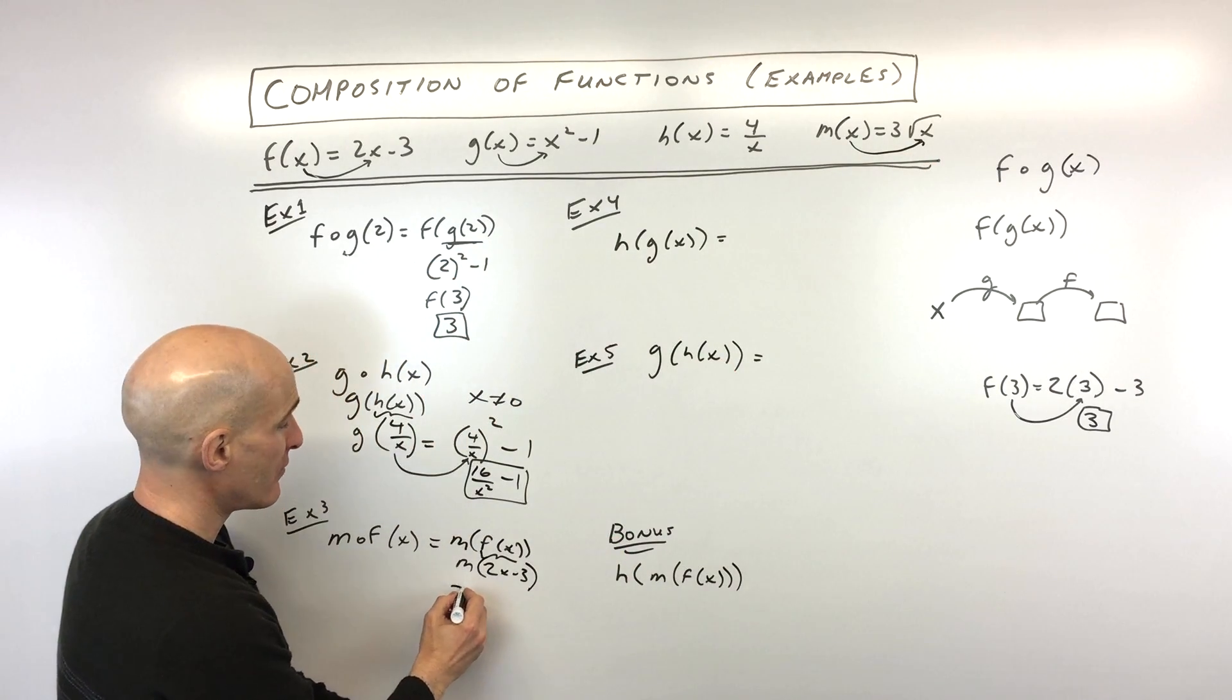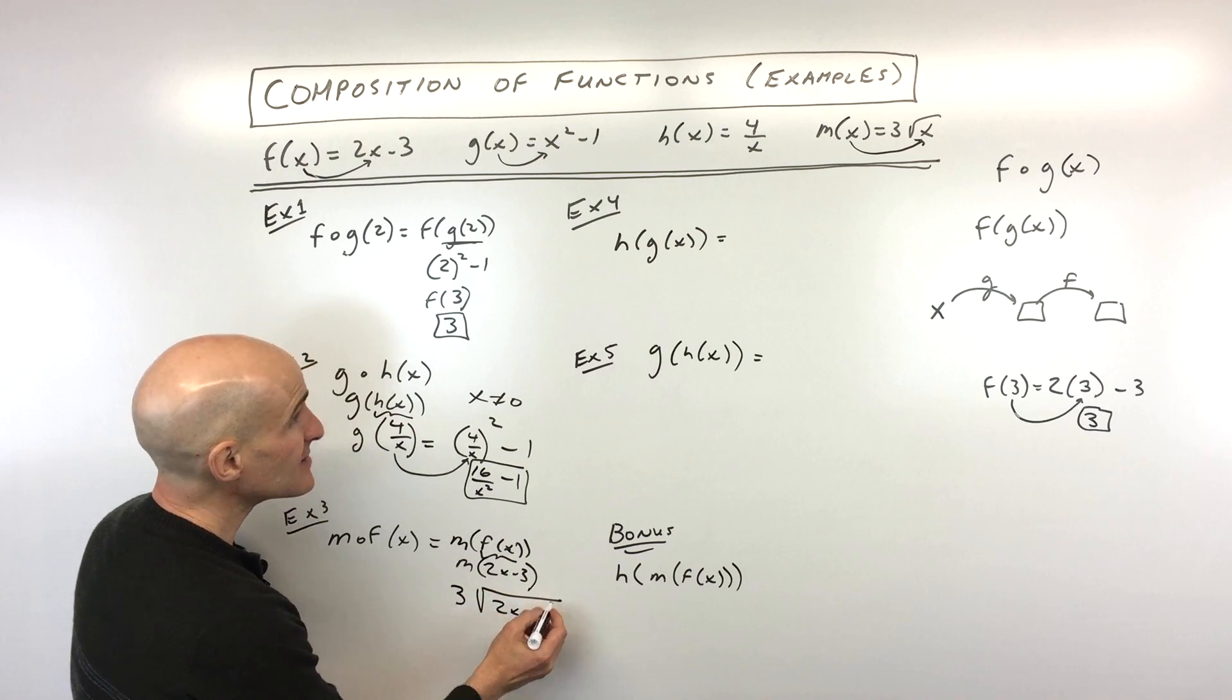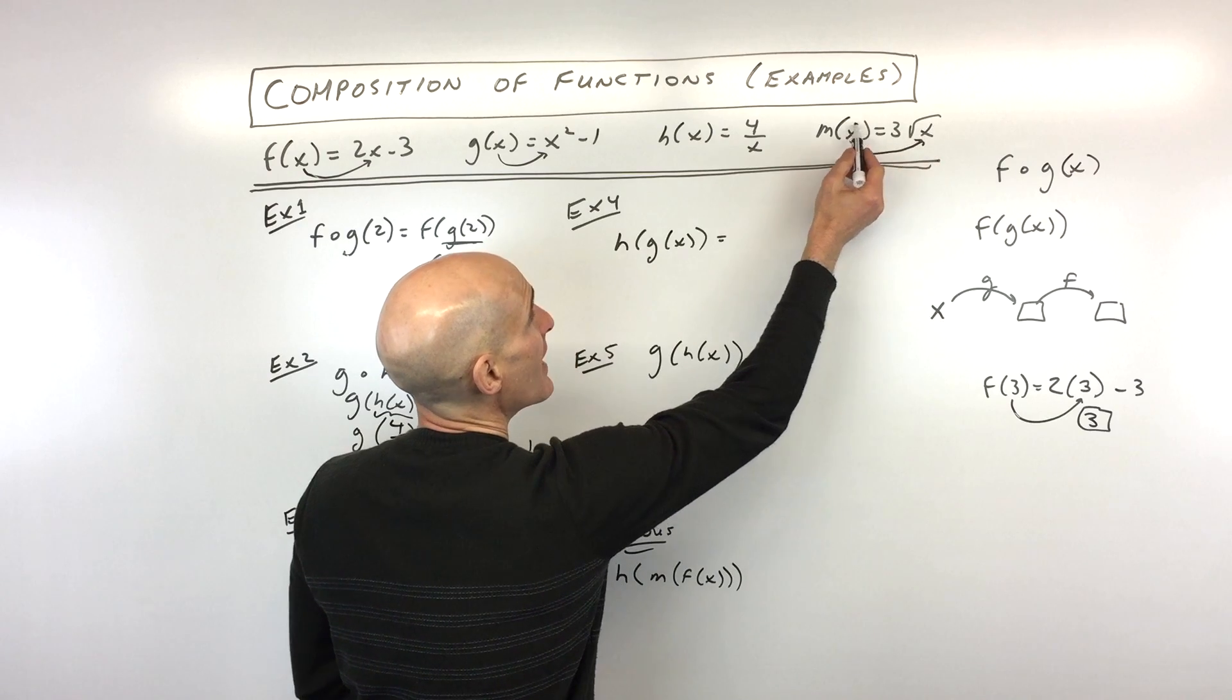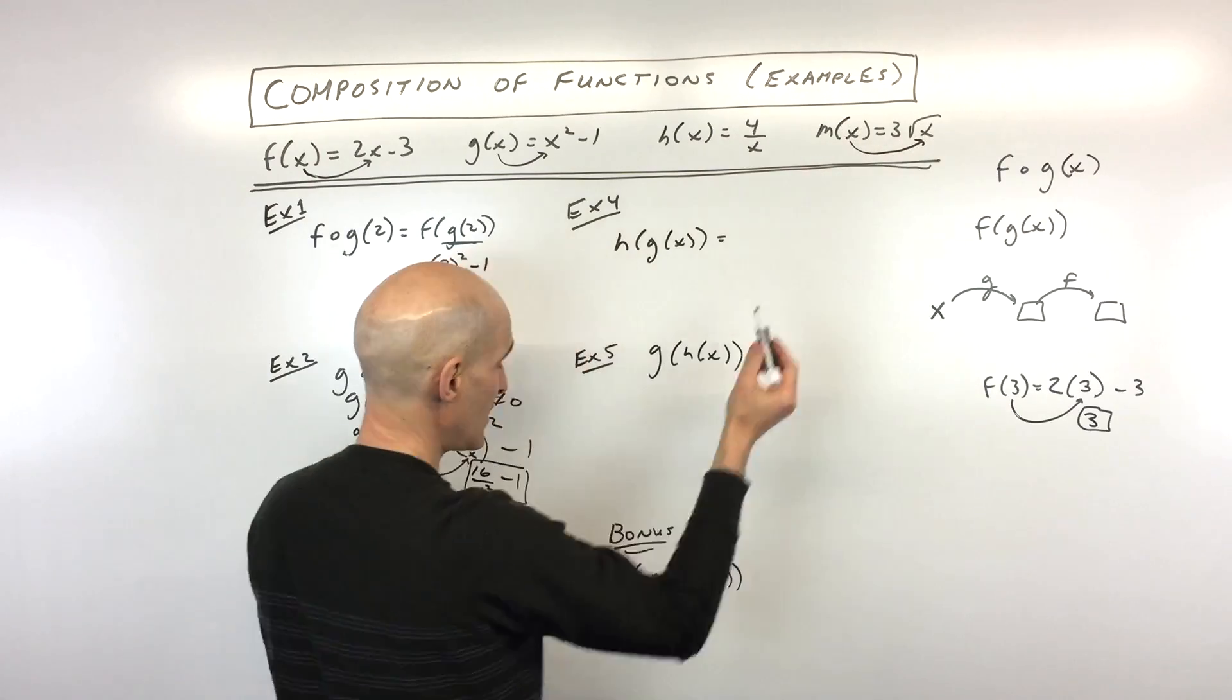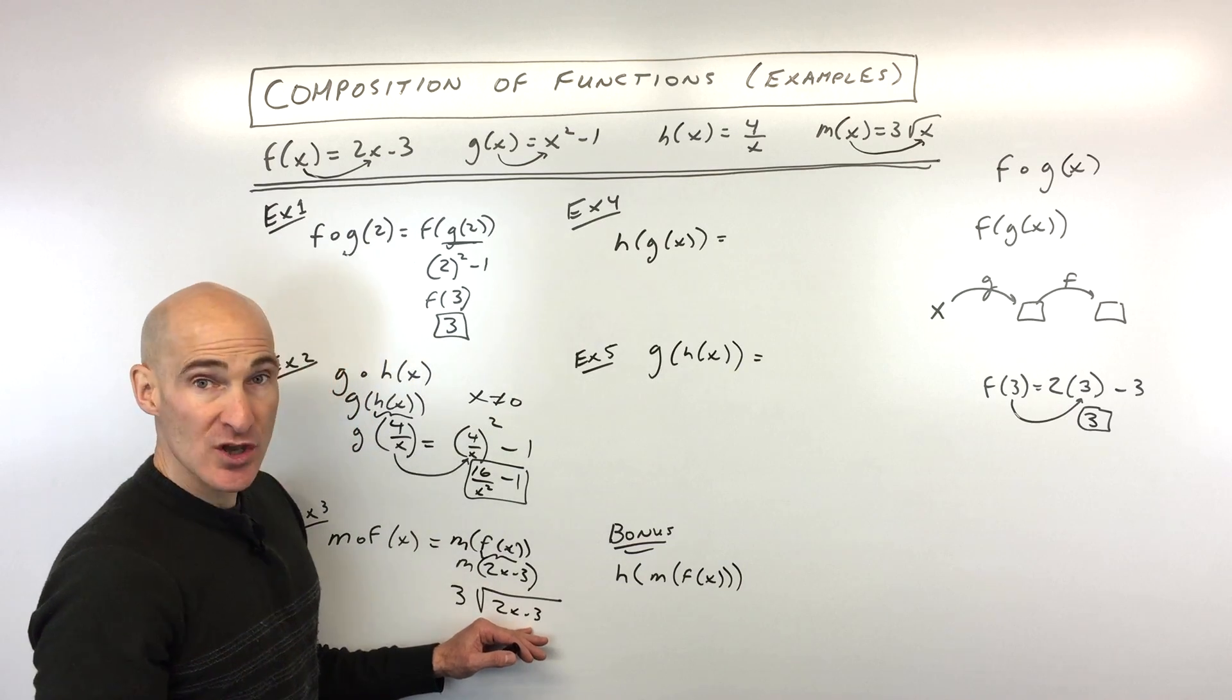So what we have here is we have 3, instead of x, I'm going to put 2x minus 3 in place of x. So whatever's in parentheses, that's what you're putting in place of x there. And we can try to simplify this as far as we can go.